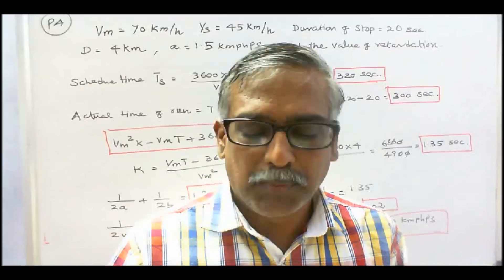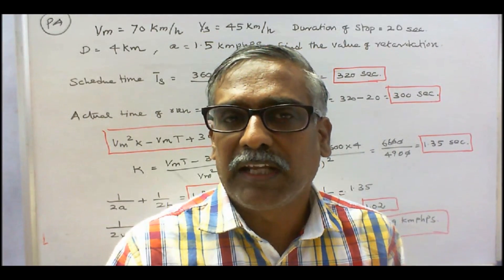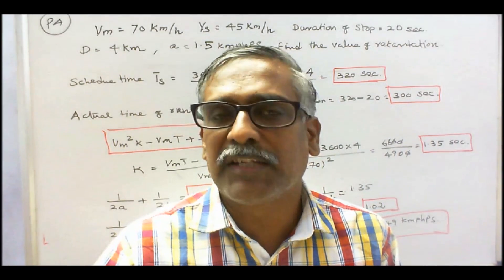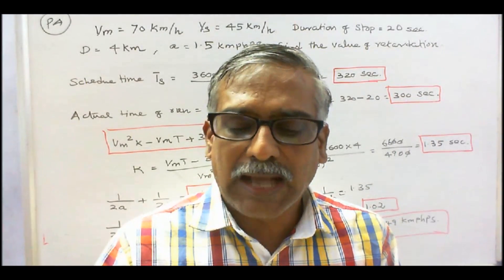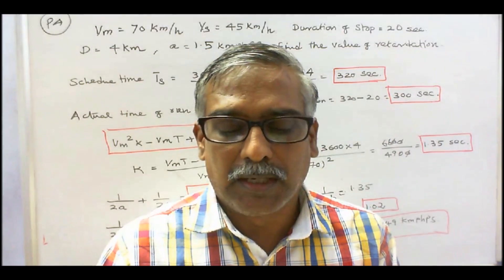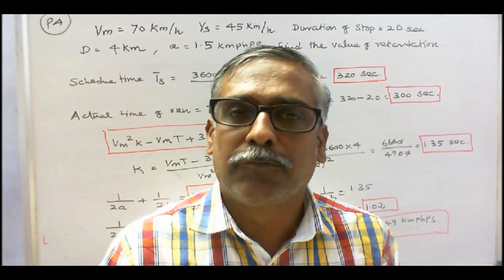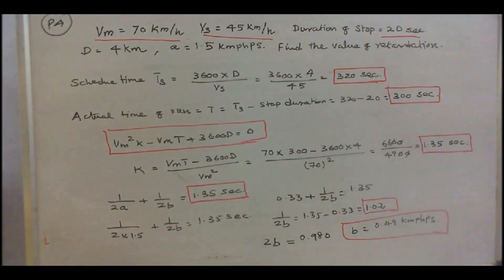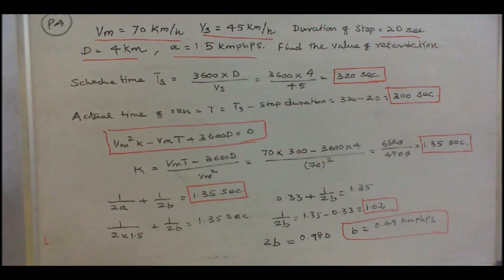Problem 4: a suburban electric train has a maximum speed of 70 km per hour. Schedule speed, including a station stop of 20 seconds, is 45 km per hour. If the acceleration is 1.5 km per hour per second, find the value of retardation when the average distance between stops is 4 km. Maximum speed is 70 km per hour, schedule speed is 45 km per hour, stop duration is 20 seconds, and distance is 4 km.